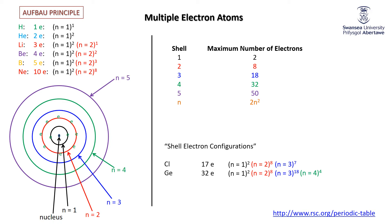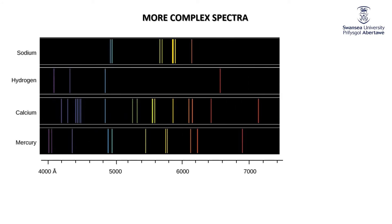The simple shell model doesn't work for higher-level atoms — there are two reasons for this. The first is that when you look at other atoms, their spectra are much more complicated with many more lines. For hydrogen, in a particular range of the electromagnetic spectrum, there are just four lines. Sodium has around eight lines. Calcium has 17 or more lines — including overlapping ones. So atoms with more than one electron have far more lines in their spectra.